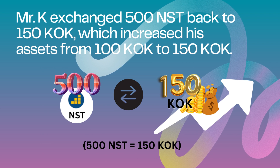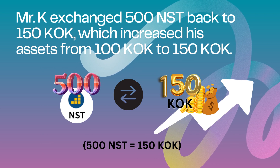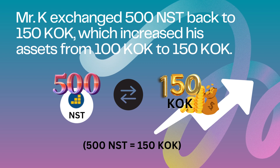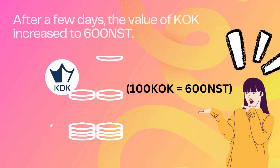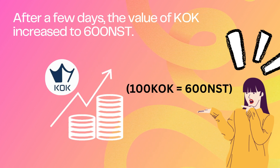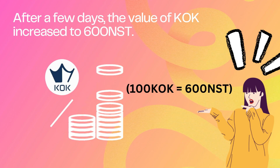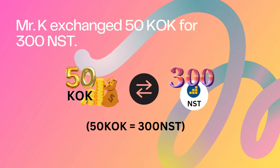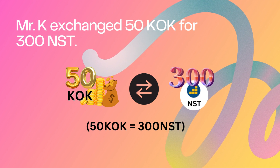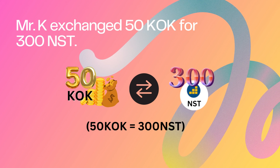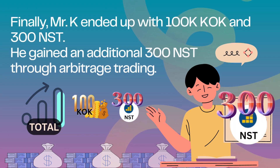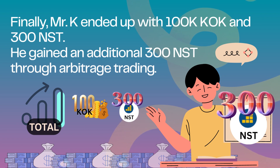Mr. K exchanged 500 NST back to 150 KOK, which increased his assets from 100 KOK to 150 KOK. After a few days, the value of KOK increased to 600 NST — 100 KOK is equal to 600 NST. Mr. K exchanged 50 KOK for 300 NST. Finally, Mr. K ended up with 100 KOK and 300 NST, gaining an additional 300 NST through arbitrage trading.